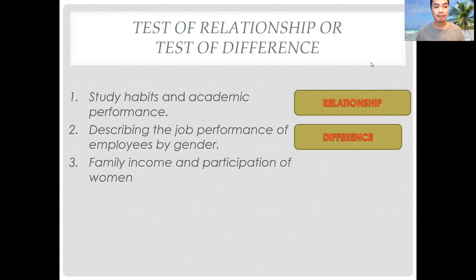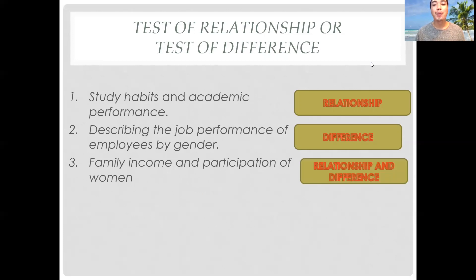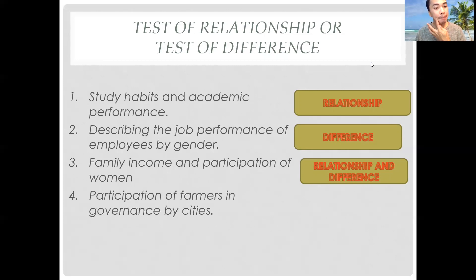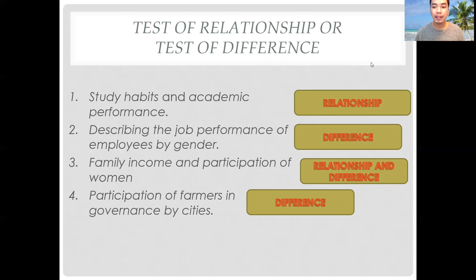Next: family income and participation of women. The answer is we could perform a test of relationship or difference in this case. We can look into the relationship between income and participation, and at the same time, we can estimate the difference of their participation when analyzed by income. Next: participation of farmers in governance by cities. The answer is test of difference, since we are estimating the difference of the computed means of their level of participation when analyzed by cities.